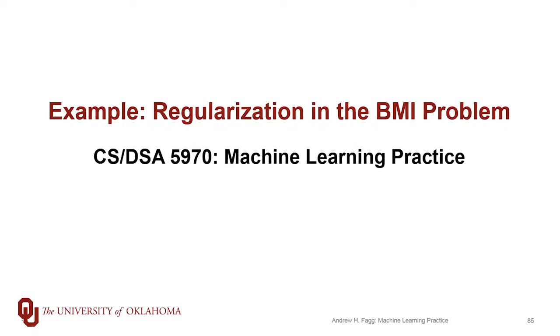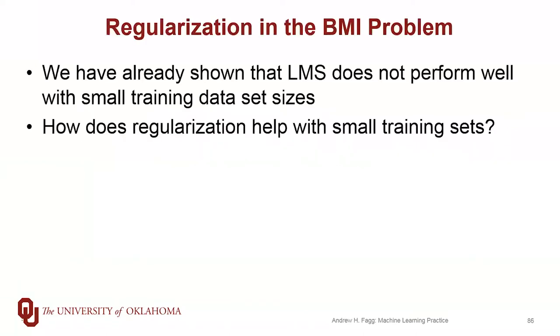We've been experimenting with the BMI problem with linear regression, and what we found was that we quite dramatically overfit the data set when we have a really tiny data set. In particular, that's the least mean squares algorithm that does this. We also talked about some regularization methods that try to achieve a balance between explaining the training data and achieving simplicity in the model, so that the resulting model will be more applicable to the wider data set. Let's try using these regularization methods with our BMI data and do a comparison between the different methods.